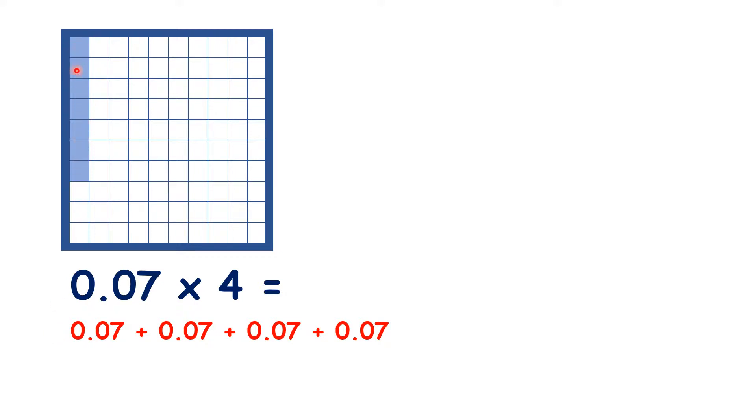So we have seven hundredths here, and if we times that by 2, 3, and 4, we have twenty-eight hundredths, or 0.28 as our answer.